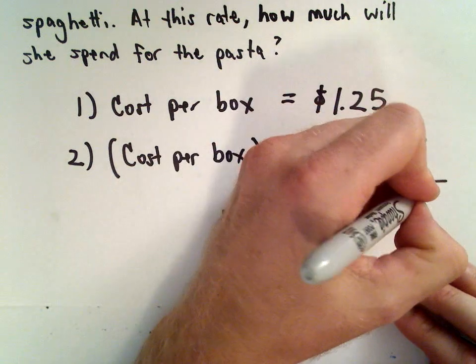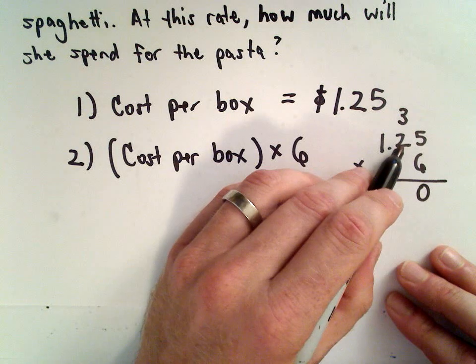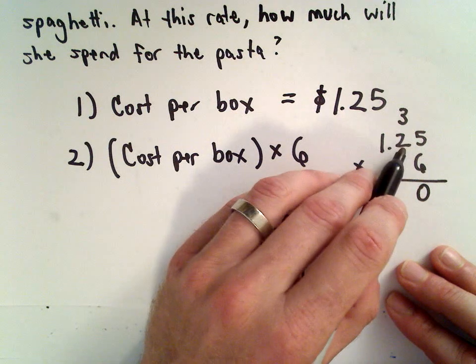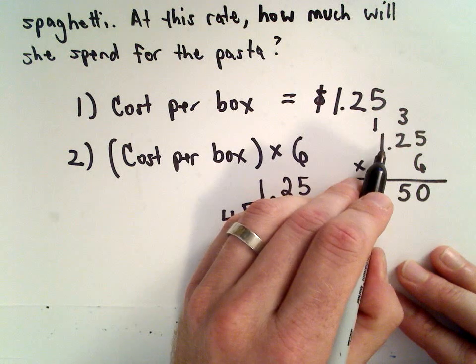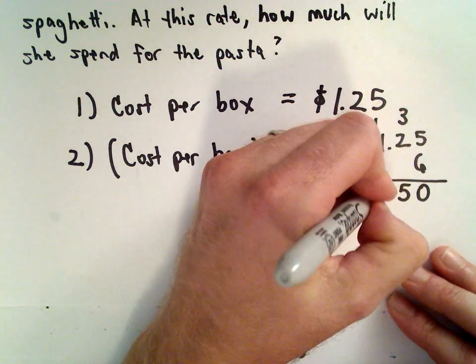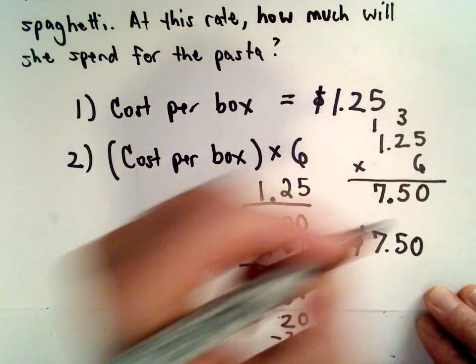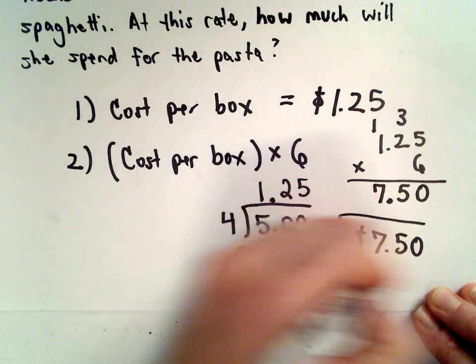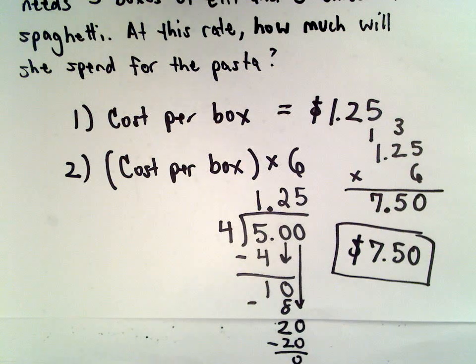Six multiplied by five is thirty so I'm going to drop down to zero and carry the three. Six multiplied by two is twelve. Twelve plus three is fifteen. I'm going to carry the one. Six multiplied by one is six plus one is seven. So it looks like she can expect to spend seven dollars and fifty cents to purchase those six boxes of pasta.